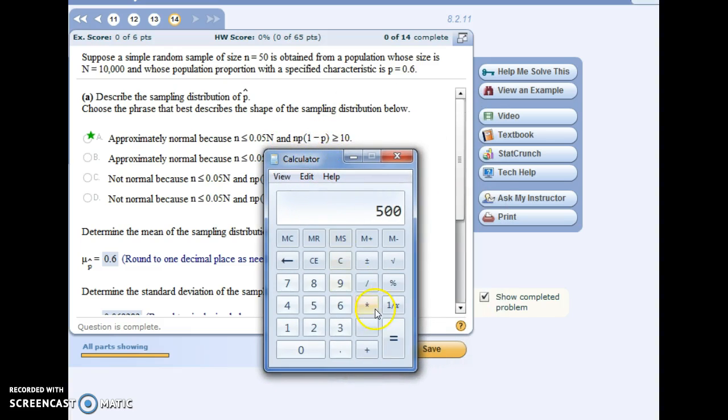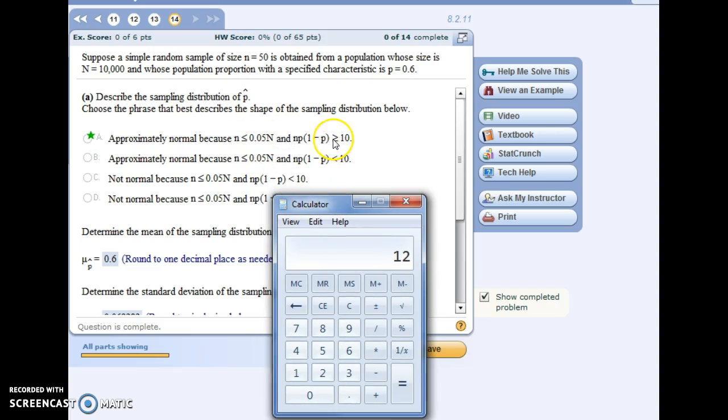And then we want this to hold true as well. So we take our sample size, we multiply it by the proportion value, and then 1 minus the proportion value, which in this case would be 40%. Since 60% was P, 1 minus that would be 40%. So I'm going to multiply by 0.4, 40%. And we get 12. And 12 is greater than or equal to 10. So since we met both those criteria, the shape of our sampling distribution would be approximately normal.